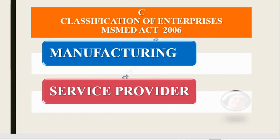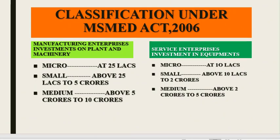Enterprises are classified as manufacturing — those that manufacture and produce — and service enterprises that provide and render services. Under the old definition, manufacturing enterprises were classified on the basis of investment in plant and machinery. Micro enterprises had investment not more than 25 lakhs, small enterprises had investment more than 25 lakhs but not more than 5 crore, and medium enterprises had investment more than 5 crore but not more than 10 crore.